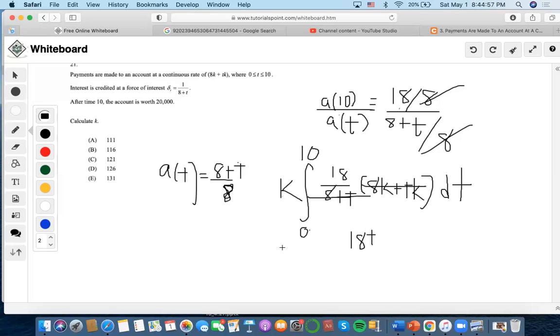We solve this integral of 18 to become 18t. We input 10 and 0, so 0 just makes it 0. We input 10, this becomes 180. We multiply it by k.